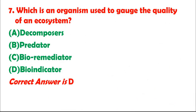Question 7: Which is an organism used to gauge the quality of an ecosystem? A. Decomposers. B. Predator. C. Bioremediator. D. Bioindicator. Correct answer is D.